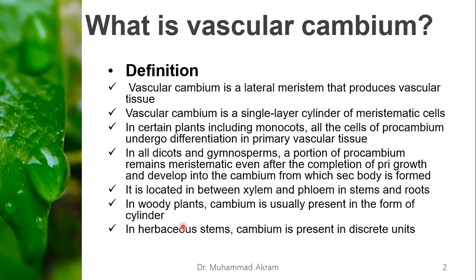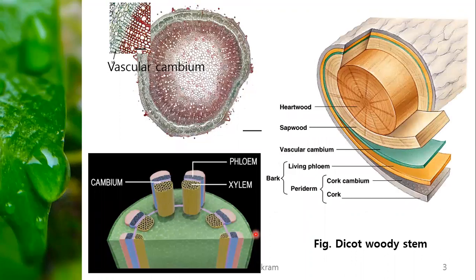In herbaceous stems, cambium is present in discrete units, not a complete cylinder. This slide shows photographs of the position of the vascular cambium between the sapwood as well as the bark in the dicot woody stem.